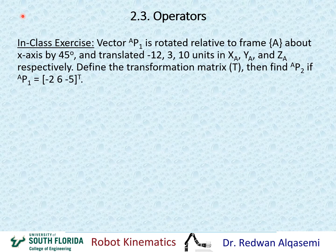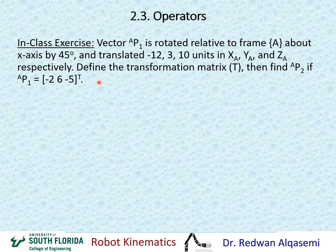Now let's take an in-class exercise for you to solve on your own. A vector P1 relative to A is rotated relative to frame A about the x-axis by 45 degrees, and translated negative 12, 3, and 10 units in XA, YA, and ZA respectively. Define the transformation matrix T, then find P2 relative to A if P1 relative to A equals [−2, 6, −5] transpose. Please pause the video and resume once you're done.